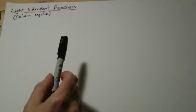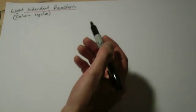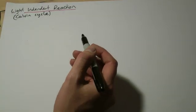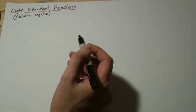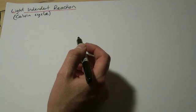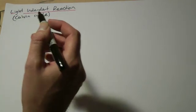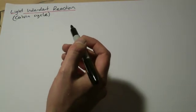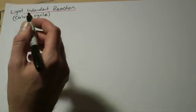We're going to look first of all at the light-independent reaction, or what's also known as the Calvin cycle. As the name suggests, the light-independent reaction does not require light to be present.